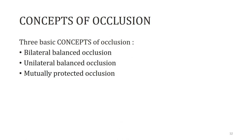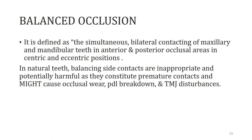There are three concepts of occlusion: bilateral balanced occlusion, unilateral balanced occlusion, and mutually protected occlusion. Coming to balanced occlusion — here all teeth are in bilateral contact in anterior and posterior occlusal areas in centric and eccentric positions. All the sides, both the jaws, and the anterior and posterior teeth have to be in contact in any position.